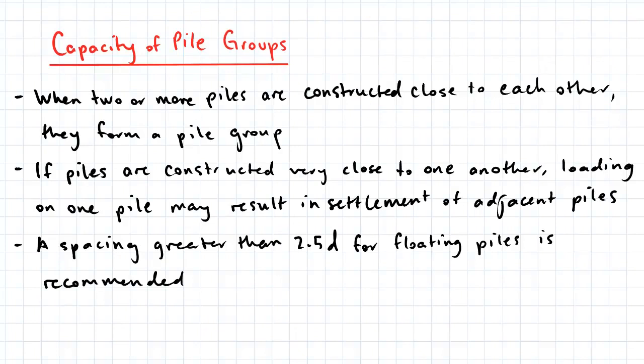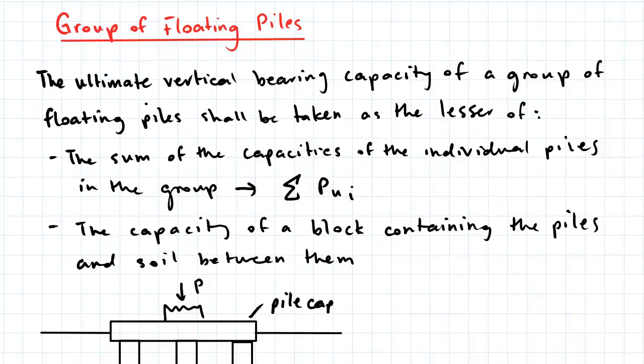If the piles are constructed very close to one another, loading on one pile not only induces settlement on the pile itself, but may also result in settlement of the adjacent piles and as a result, a reduction in their capacity. A spacing greater than 2.5 diameters for floating piles is generally recommended.